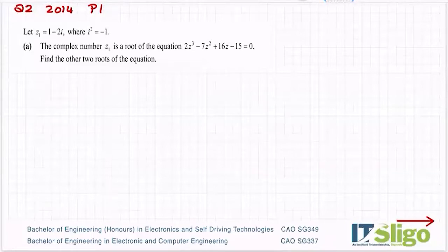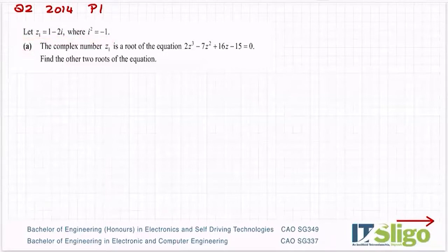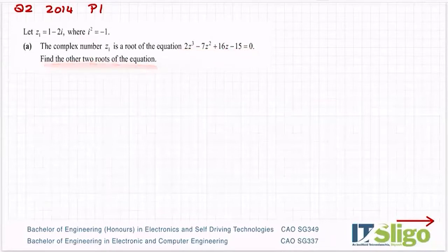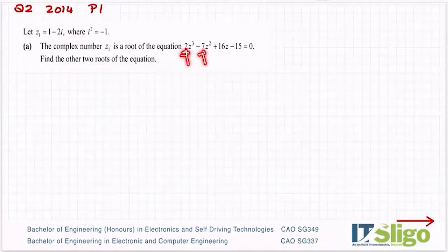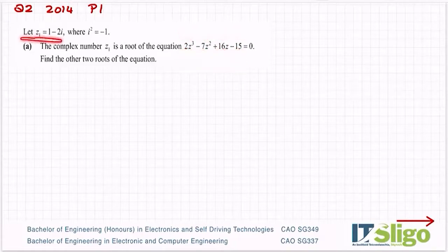Part a sits outside the whole question, so it applies to every part — a, b, c, d, whatever. Part a: the complex number z1 is a root of the equation 2z cubed minus 7z squared plus 16z minus 15 equals zero. Find the other two roots. The first thing I'm noting is that all the coefficients are real — no complex coefficients — so a, b, c, and d are real. Therefore the conjugate root theorem applies.